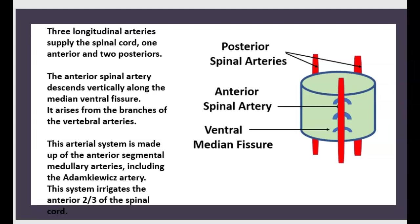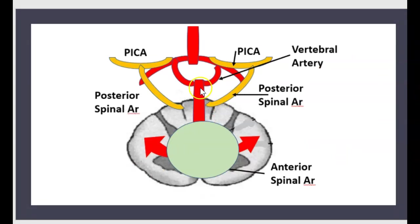This arterial system is made up of the anterior segmental medullary artery, including the Adamkiewicz artery. The system irrigates the anterior two-thirds of the spinal cord. The two posterior spinal arteries come from the PICA — posterior inferior cerebellar artery — which is a branch of the vertebral artery.